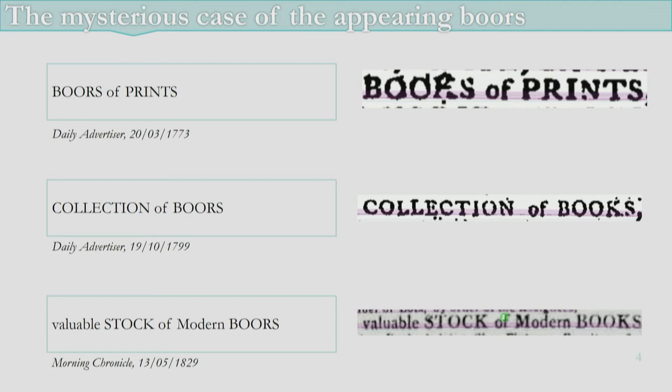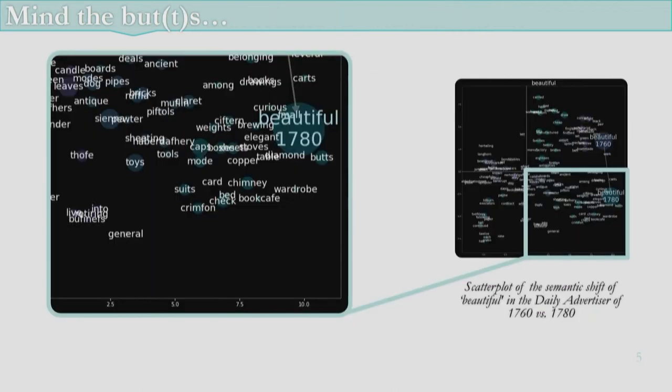Unfortunately not all of these conundrums can be solved by a simple search. Here I created a scatter plot which shows the semantic shift of 'beautiful' between 1760 and 1780. What we would expect is 'beautiful' to shift away from words related to making an object — such as handmade or finished — to the objects themselves being described as beautiful. We can read about beautiful diamonds, wardrobes, and butts.